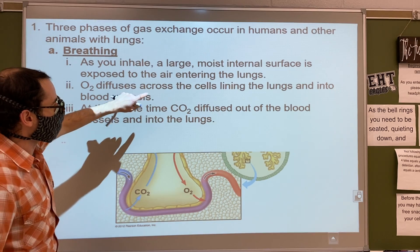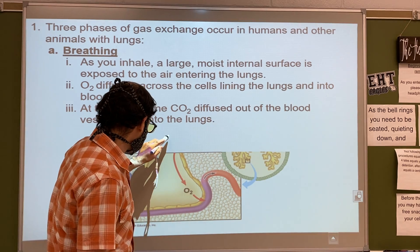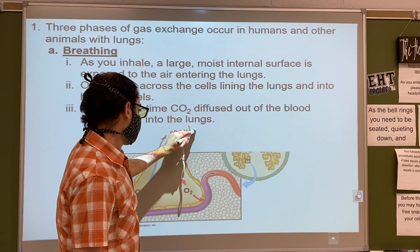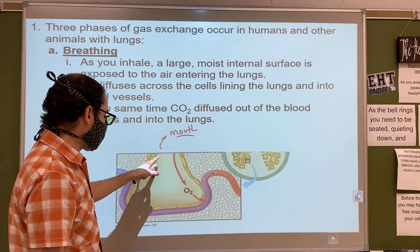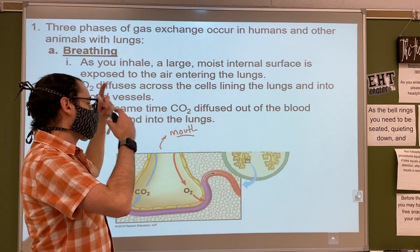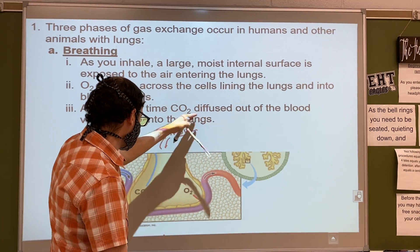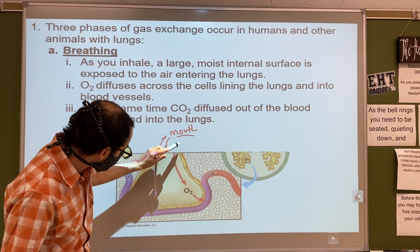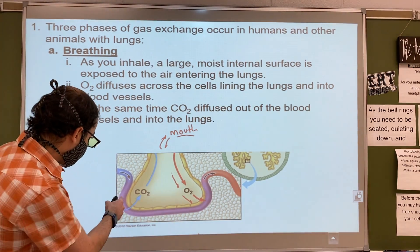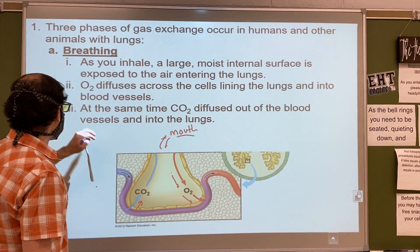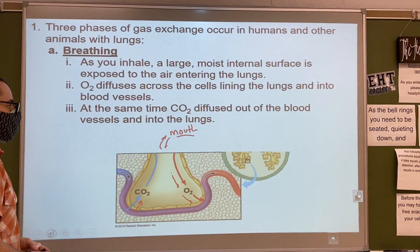O2 diffuses across the cells lining the lungs and into blood vessels. This is the alveoli of the lungs - as it goes out of the lungs, up your throat, out to your mouth, that's the quick version. When oxygen comes in, oxygen goes into your blood, and carbon dioxide comes out of your blood. Carbon dioxide diffuses out of the blood vessels and into the lungs.